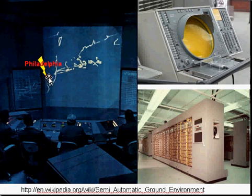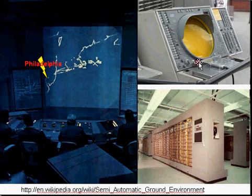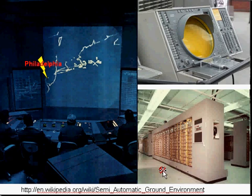It's worth pointing out on this map: Philadelphia is here, Delaware Bay, Long Island of New York, all the way up to Boston. Basically, the East Coast is displayed in this window. These are those radar tracking windows you may have seen. And this is what the computers of the era looked like — large cabinets.